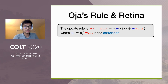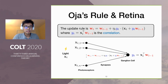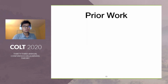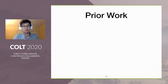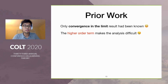Now let us put Oja's rule in the context of retina and see how retina can implement Oja's rule. Recall that we have this two-layer circuit where the input goes to streaming PCA, with weight w and a linear neuron. Oja's rule basically provides us how to update the synapse. There has been extensive work in both experimental and computational neuroscience studying the effectiveness of Oja's rule. However, the theoretical understanding prior to our work is very limited — only convergence in the limit results have been known before. One excuse for the slow development in theoretical work is that the higher-order term in Oja's rule makes the analysis very difficult.